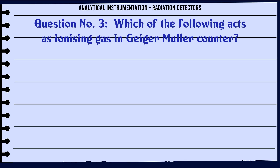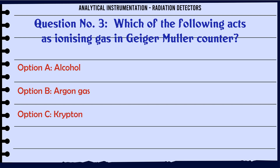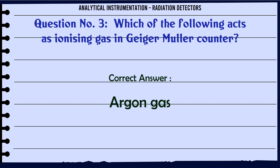Which of the following acts as ionizing gas in Geiger-Müller Counter? A. Alcohol. B. Argon gas. C. Krypton. D. Hydrogen. The correct answer is Argon gas.